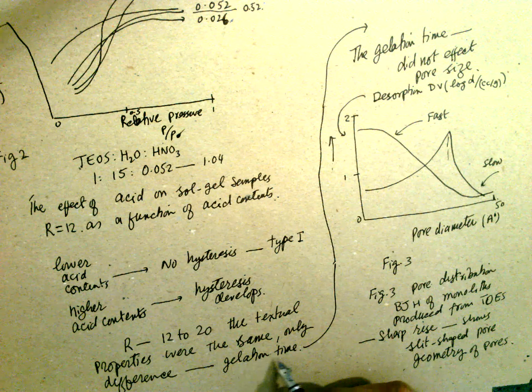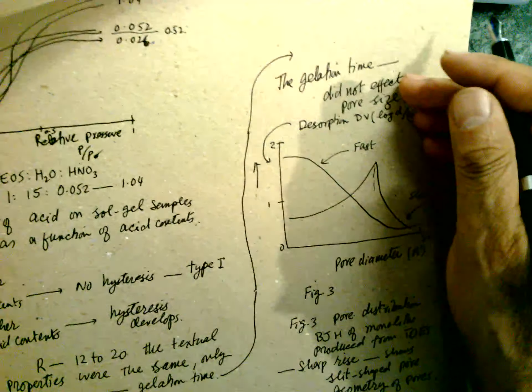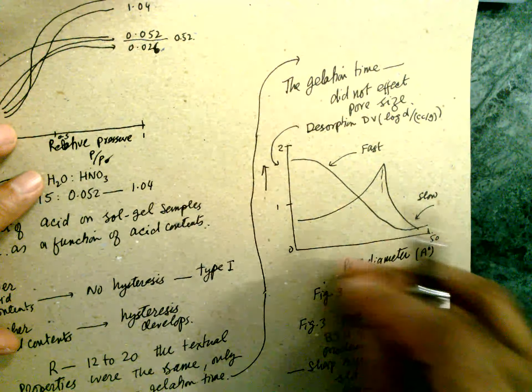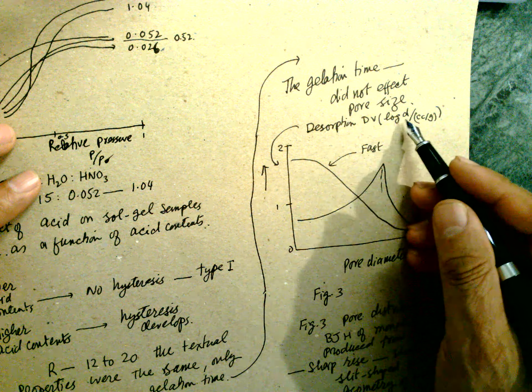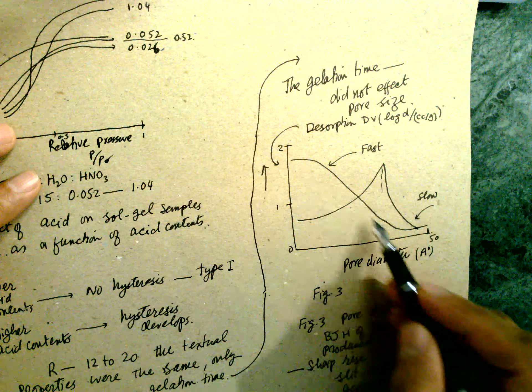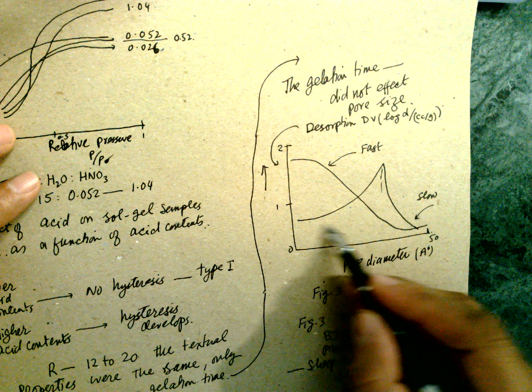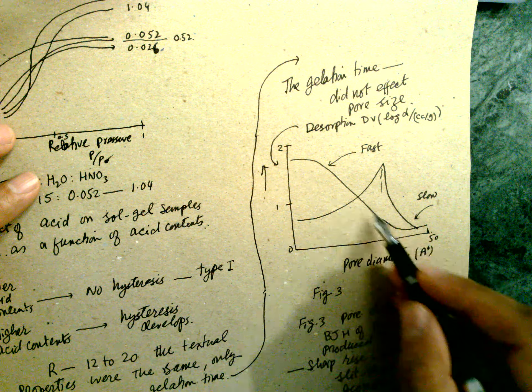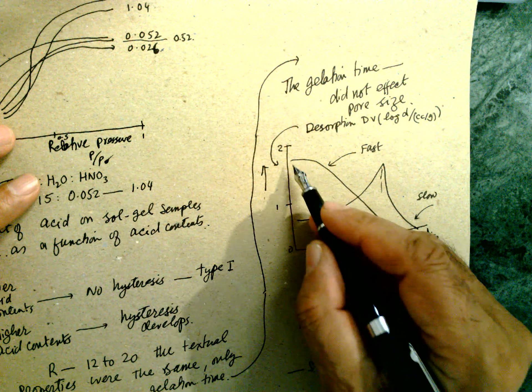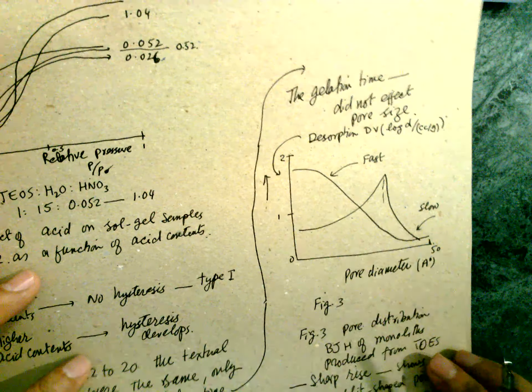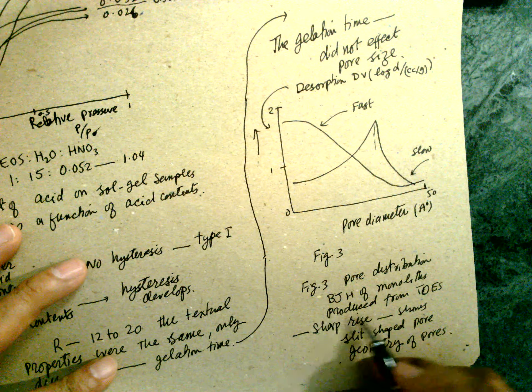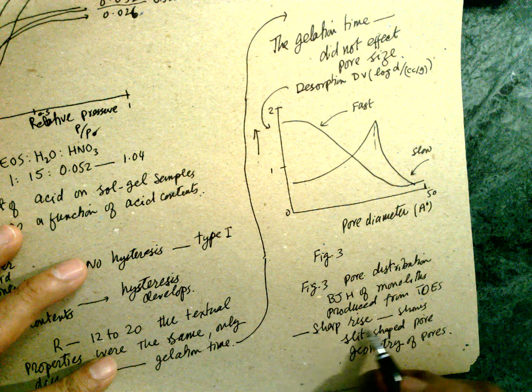R12, the texture property were the same. Only the difference is the gelling time. Gelling time, pore diameter, this one is the distribution of this one. This is slow method, and this is fast method. This is the hazard distribution of the pores.